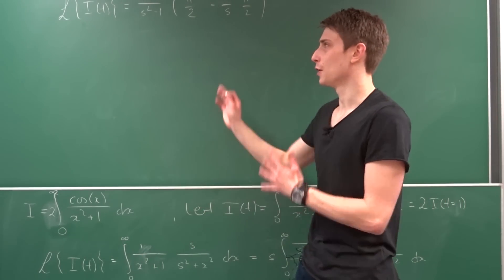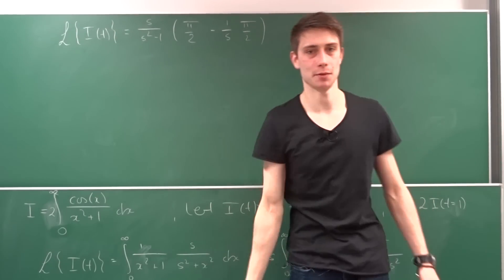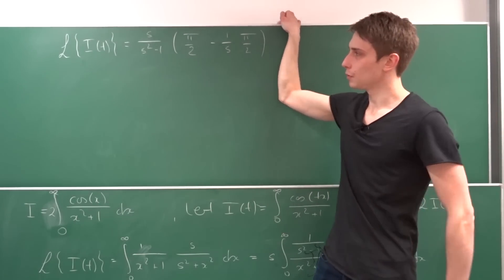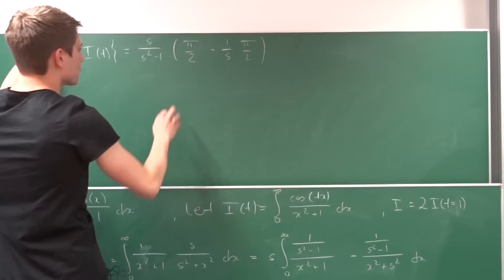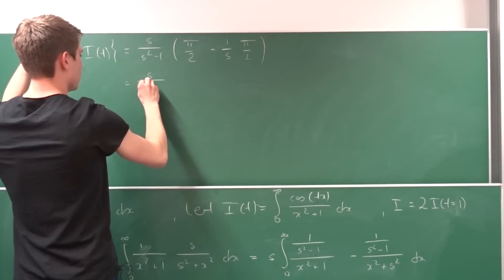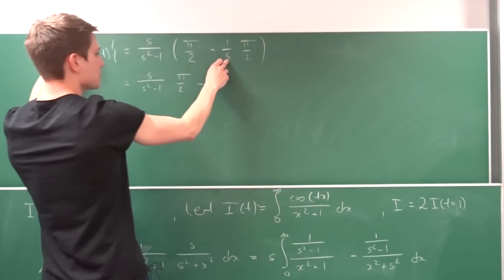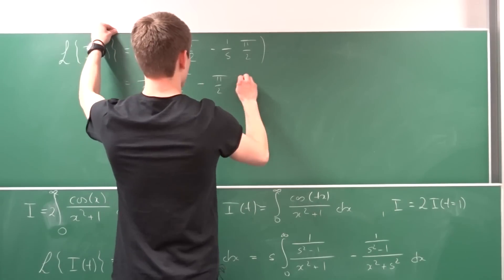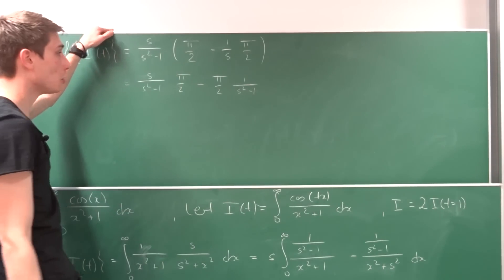Sometimes I forget to clean the other chalkboard and then I have to make a cut — never mind that. So distributing everything: we have s over (s squared minus 1) times pi over two, and then minus — the s's cancel — so we get pi over two times 1 over (s squared minus 1).